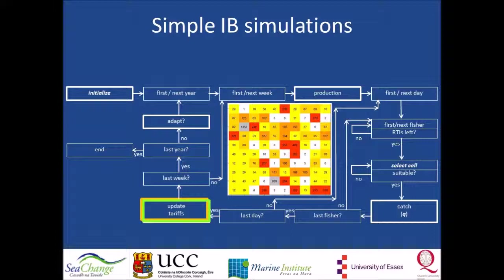Two processes are of particular importance. Each week, the cell tariffs will be updated based on the cell's CPUE of the week before. And each year, the realized harvest rate of the previous year will be evaluated against the target. Our harvest control rule prescribes that if the realized harvest rate deviates by more than 10% from the target, the boundaries between the tariff levels will be adjusted up or down accordingly.